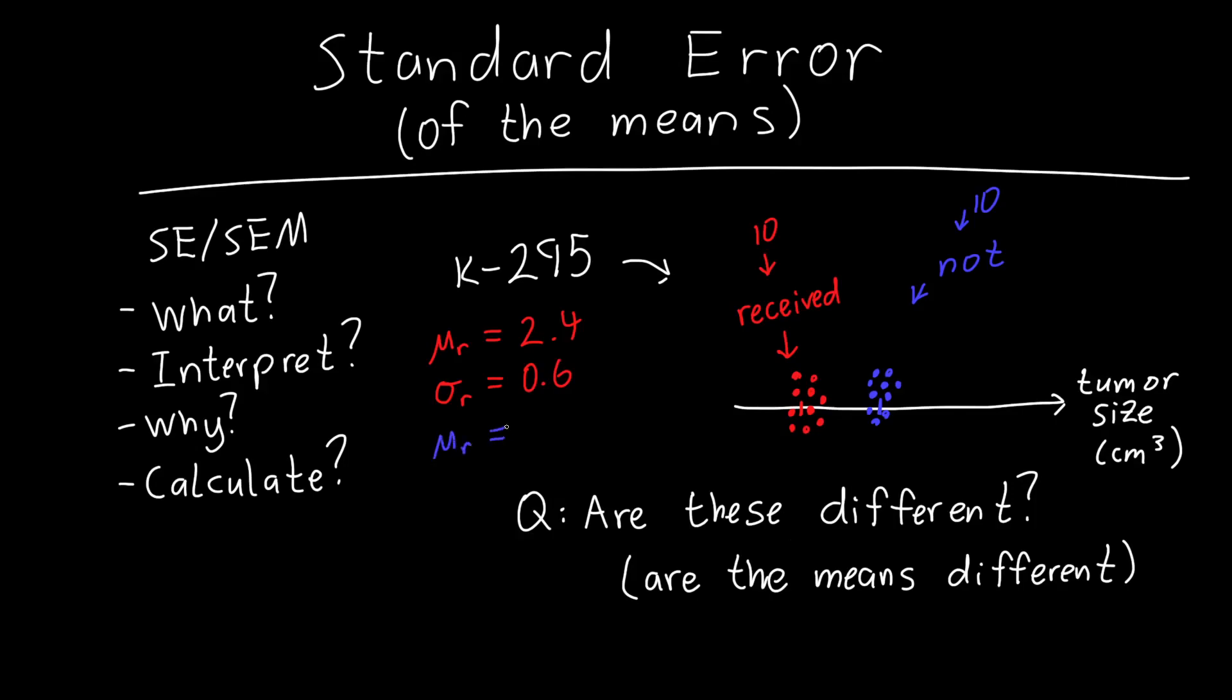The mean for the group that didn't receive the drug was 4.3, so they've got on average a larger tumor. And the standard deviation was 0.4.